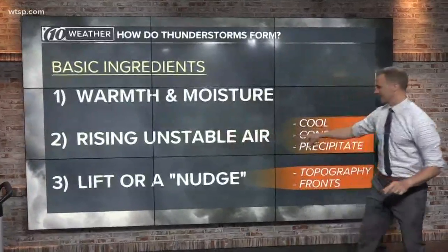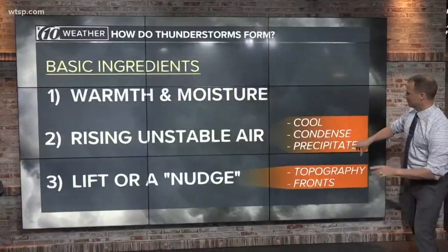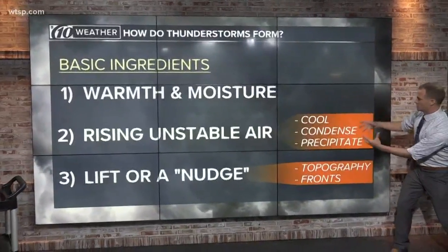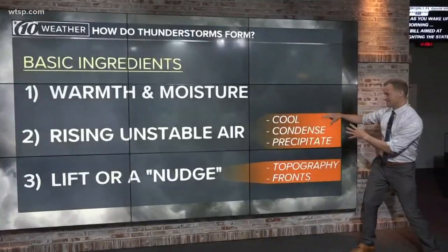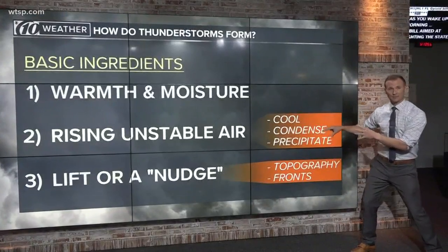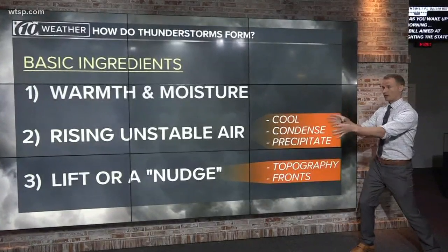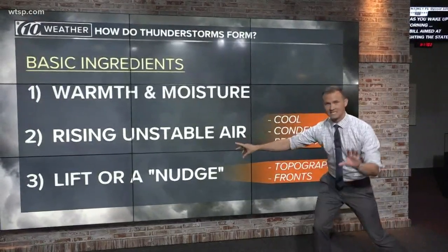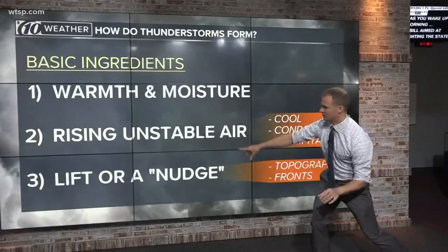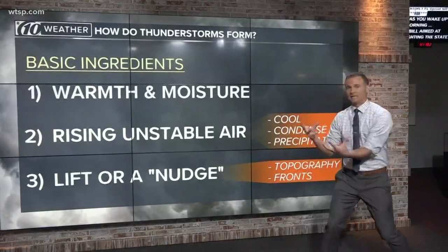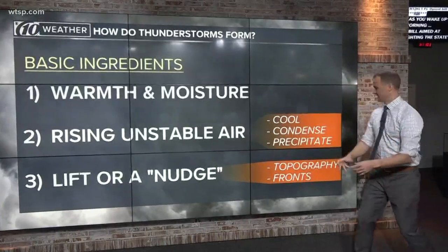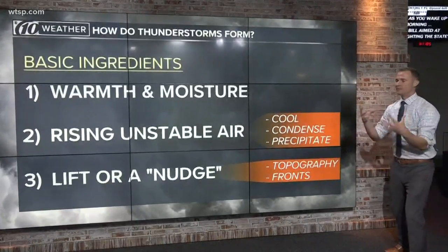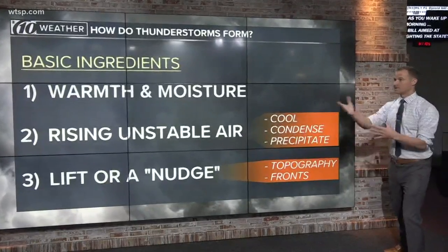You need rising and unstable air, and that allows the moisture to cool, condense, and then precipitate. Remember your water cycle? So then you need — and this is the most important thing — you need some sort of lift or a nudge, and that would be like a cold front, mountains, hills, or sea breeze.